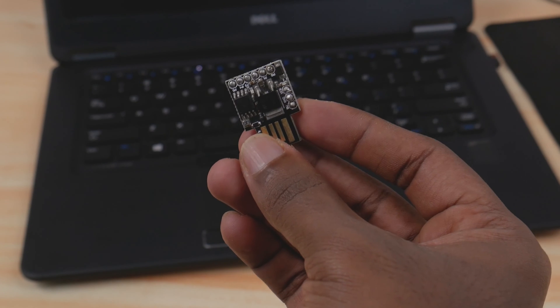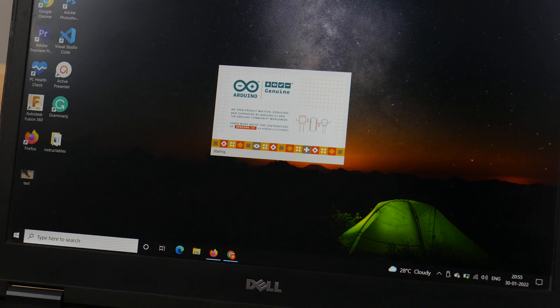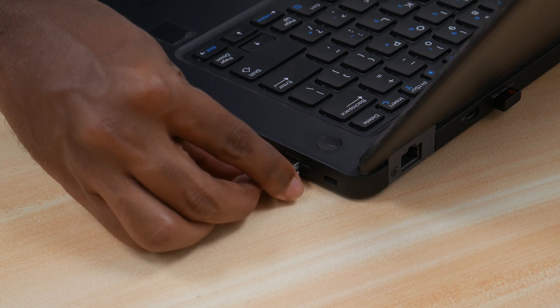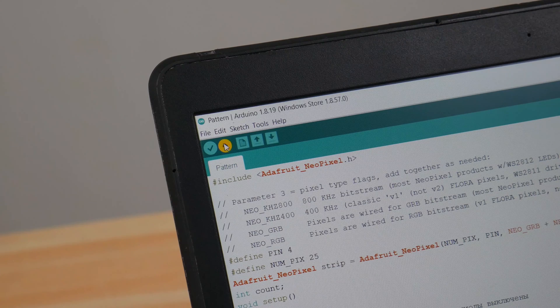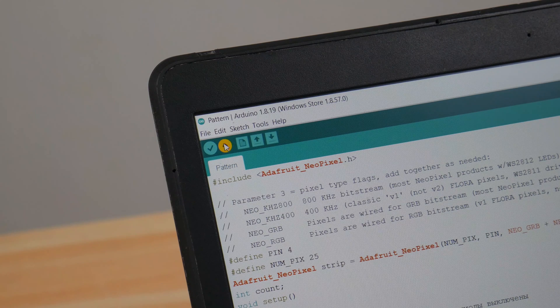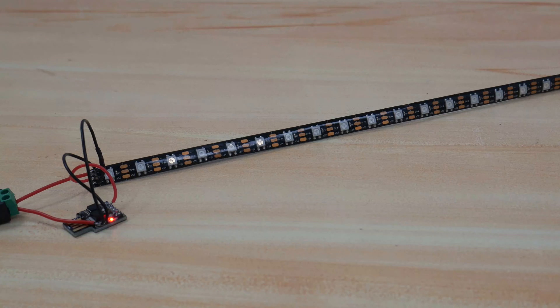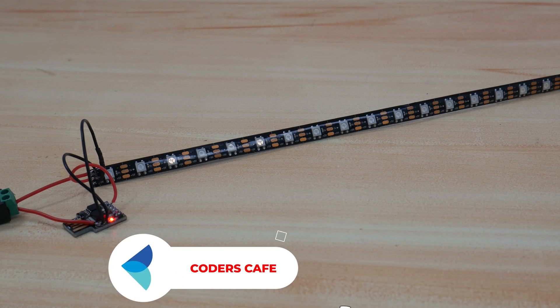Let's connect Digispark to the computer and upload some sample code. For demo purposes, we've written a code consisting of three effects. After uploading the code, unplug Digispark and connect the LED strip to the microcontroller as shown in the circuit diagram given in the description.